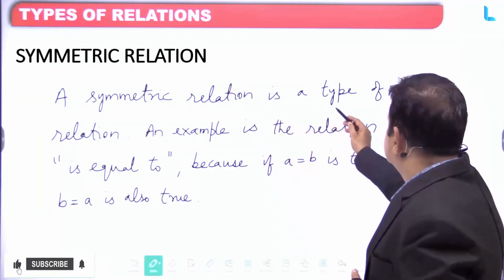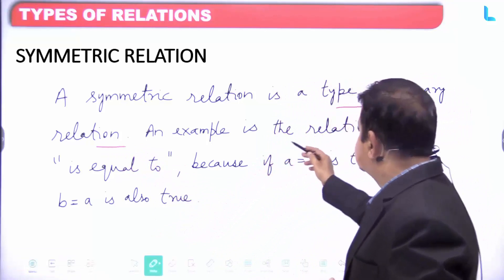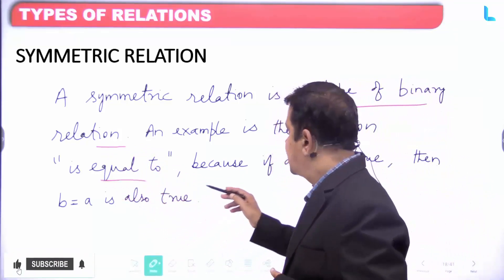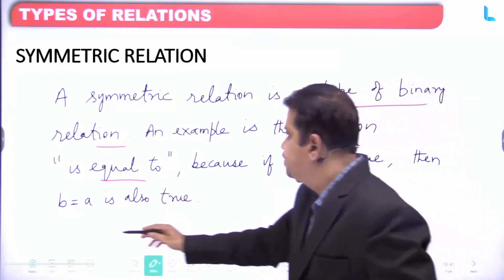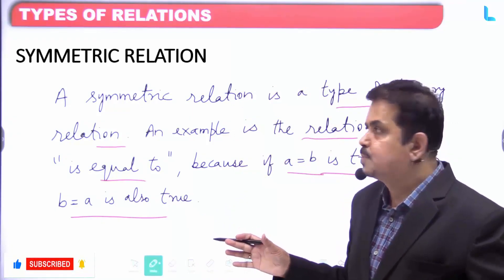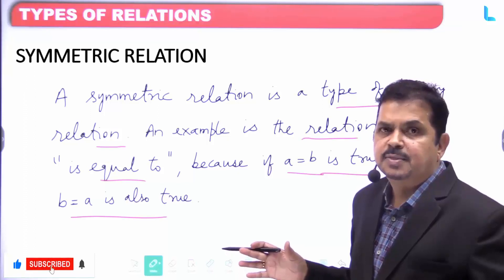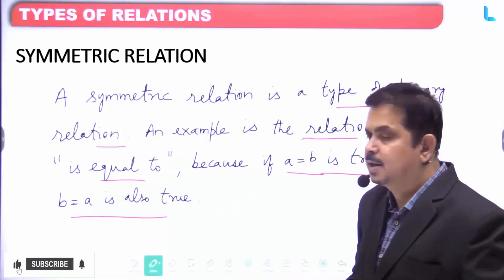A symmetric relation is a type of binary relation. An example is 'equal to,' because if a equals b is true, then b equals a is also true. I hope now you have understood the meaning of a symmetric relation by considering this particular example.